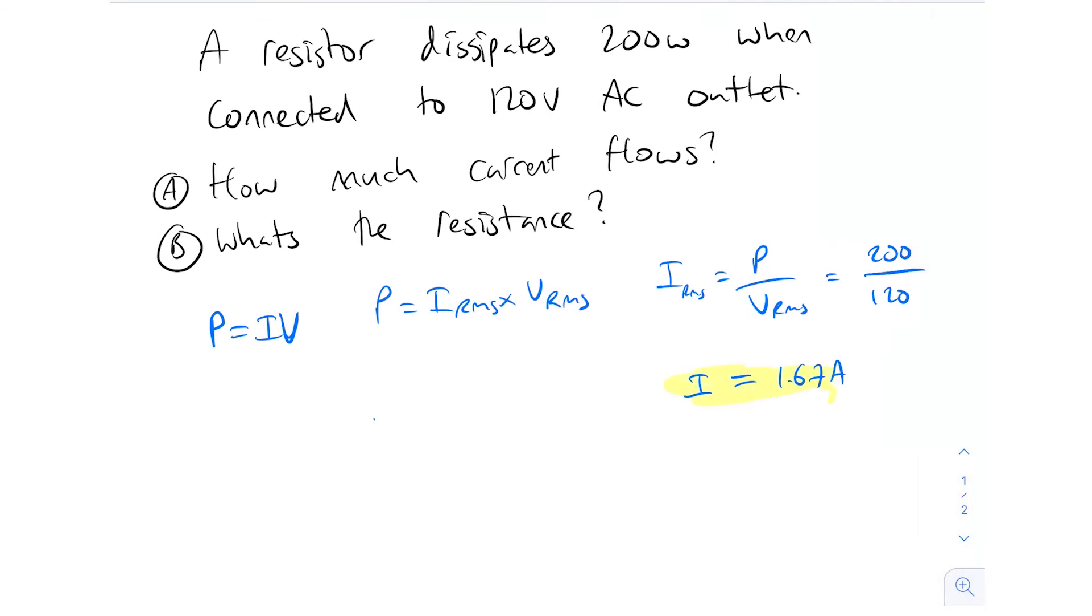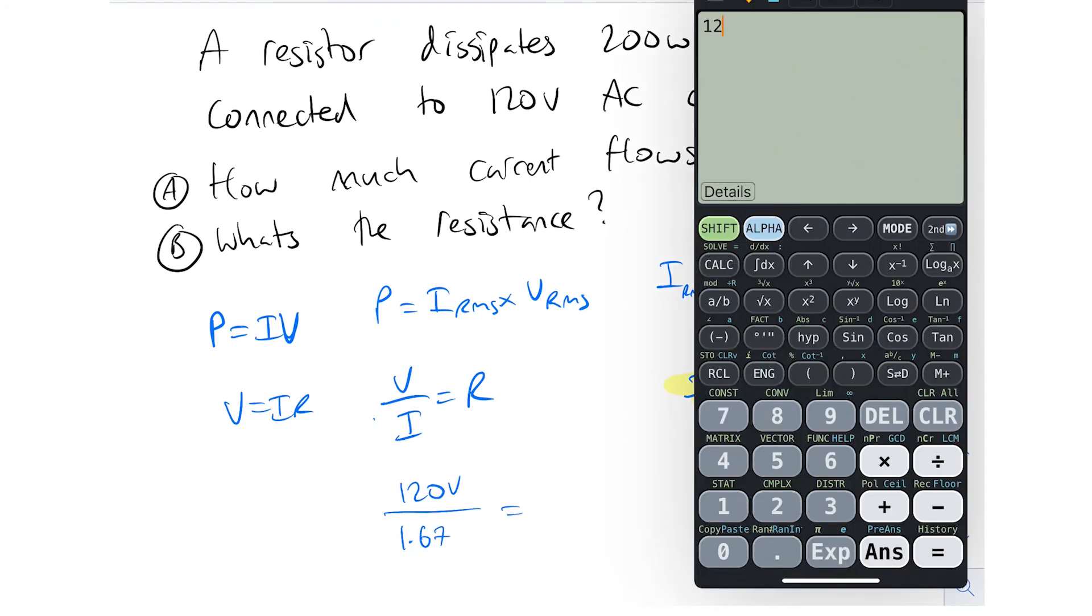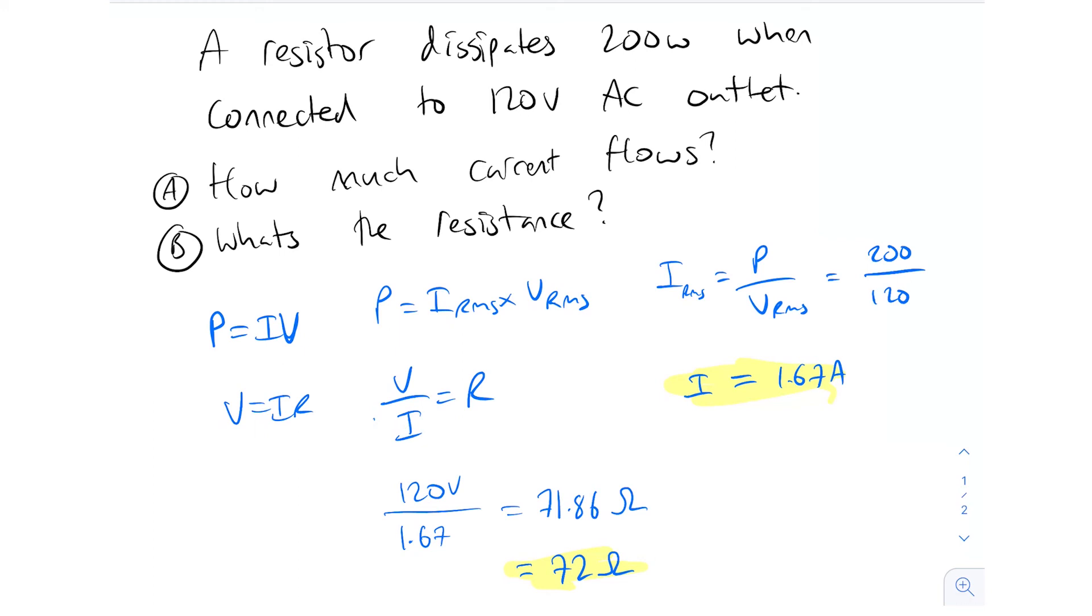Okay, so we've got the current now. So we now need to find the resistance. So V = IR. Obviously, V_RMS = I_RMS times resistance. So we just do V divided by I equals R to find out the resistance. And so we have the voltage, which is 120 volts. We divide that by the resistance. Sorry, we divide that by the current, which is 1.67 amps. 120 divided by 1.67, you get 71.86 or 72 ohm resistor.